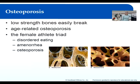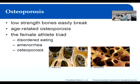Age-related osteoporosis affects most people over the age of 70. We see this a lot with kyphosis, where the thoracic spine arches outward and people have that hunchback appearance. This results from vertebral fractures where the bones compress and collapse, causing people to actually lose height. Most fractures in people over 60 are due to osteoporosis because it makes bones so weak.